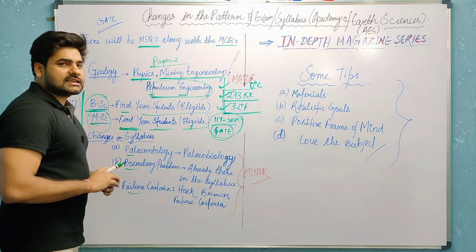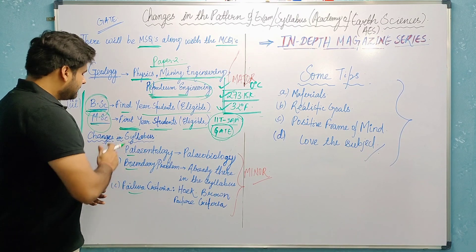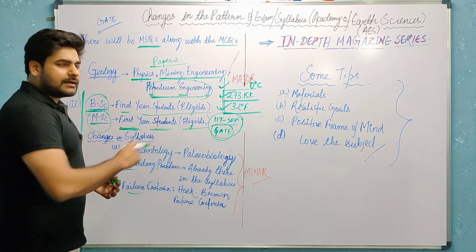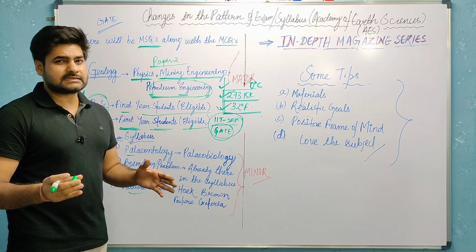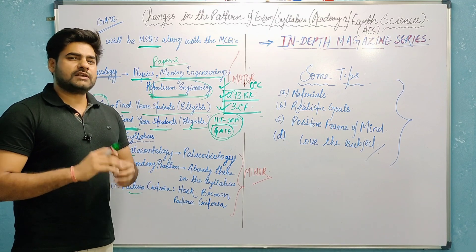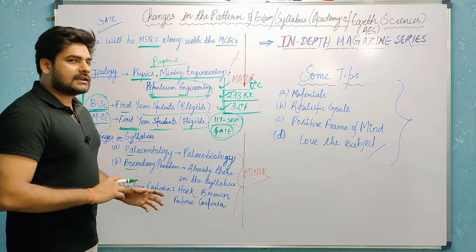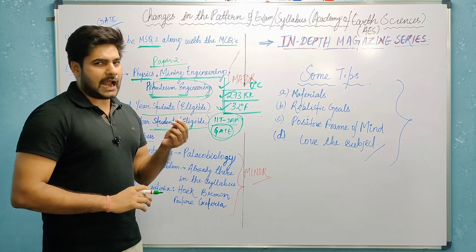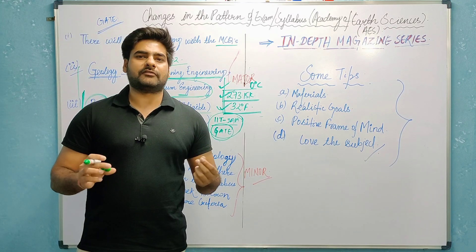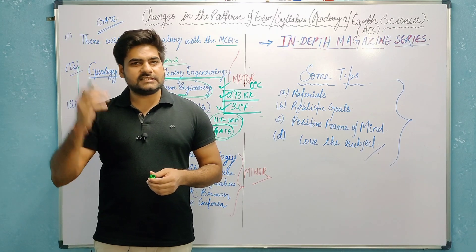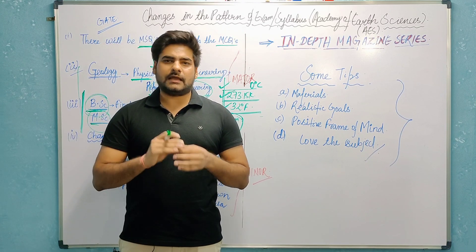Regarding changes in syllabus, there is no major change. Paleontology becomes paleobiology. The boundary problem, which was previously mentioned, and failure criteria — specifically Hoek-Brown failure criteria — have been added along with Coulomb and Griffith. So these are all the changes in the pattern of exam and syllabus.